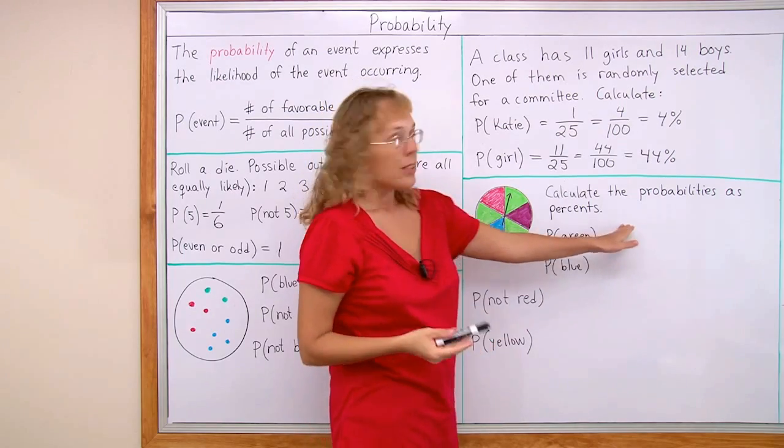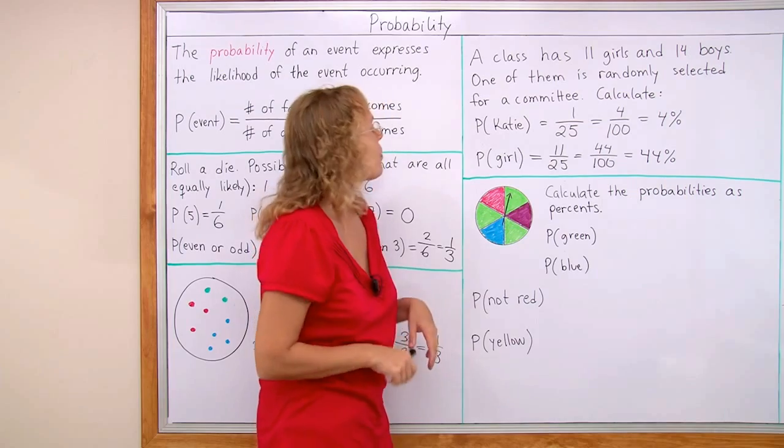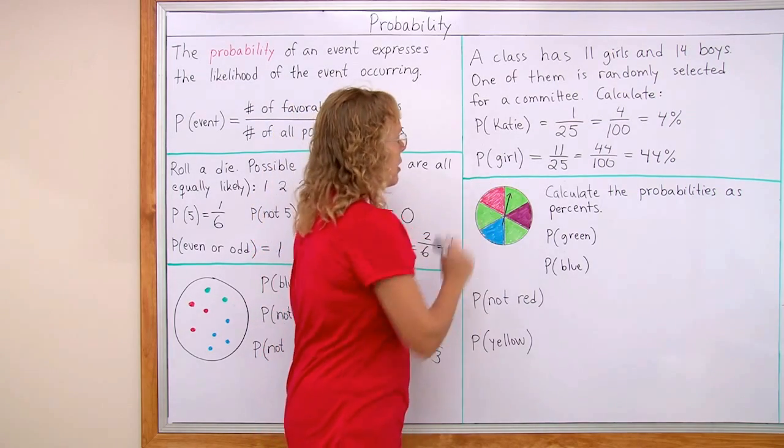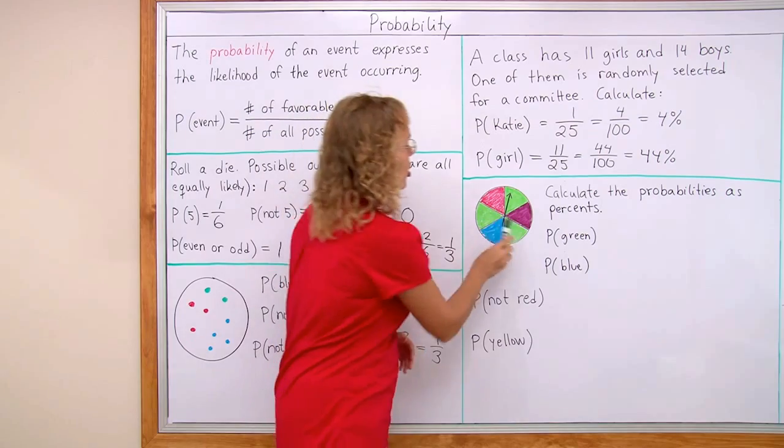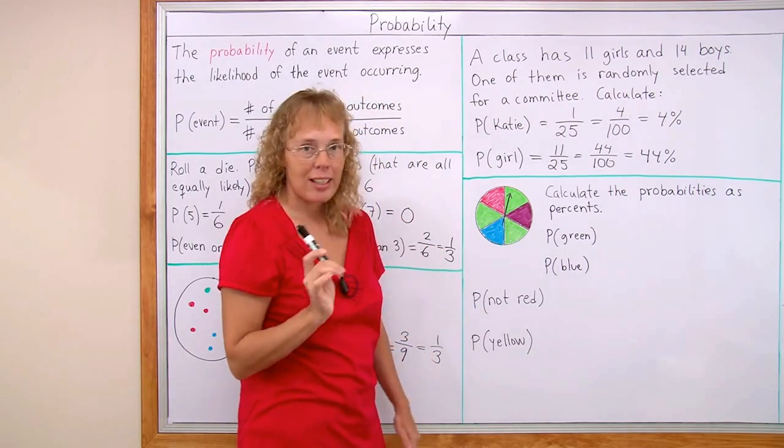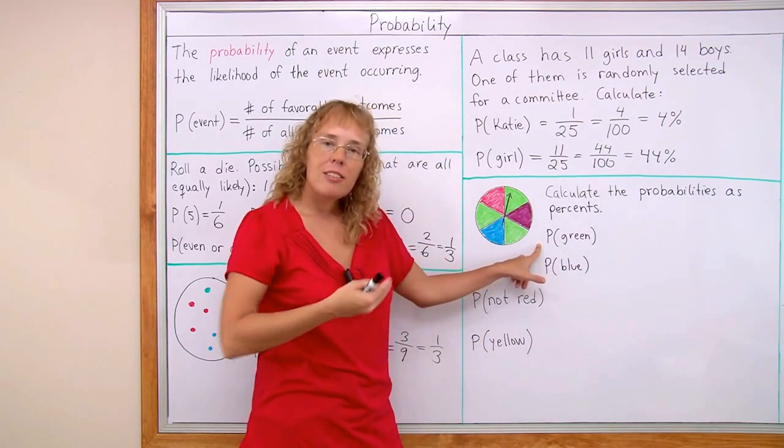Here. Calculate the probabilities as percents when this spinner is spun once. That's our experiment. We spin it once and it should be a fair spinner so that each outcome here is equally likely. So then we can use this formula.